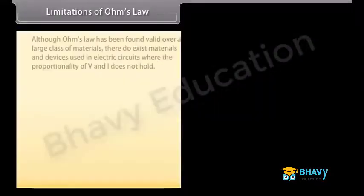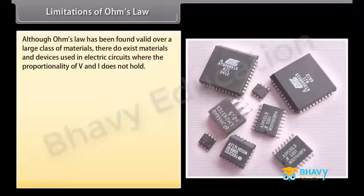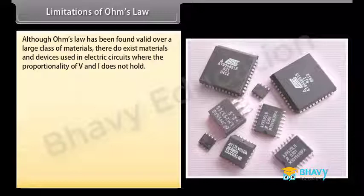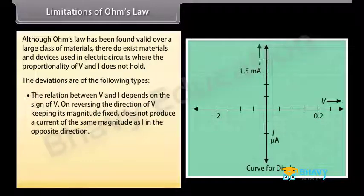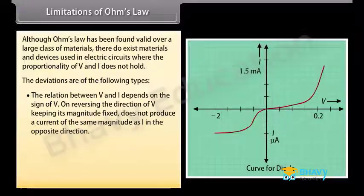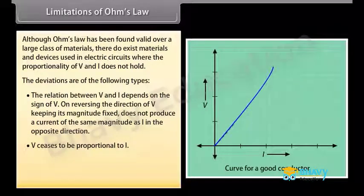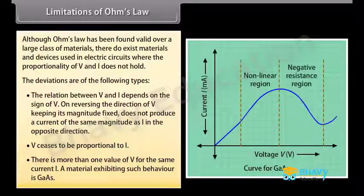Limitations of Ohm's Law: Although Ohm's Law has been found valid over a large class of materials, there exist materials and devices where the proportionality of V and I does not hold. The deviations include: the relation between V and I depends on the sign of V; reversing the direction of V does not produce a current of the same magnitude in the opposite direction; V ceases to be proportional to I; and there is more than one value of V for the same current I. A material exhibiting such behaviour is gallium arsenide.